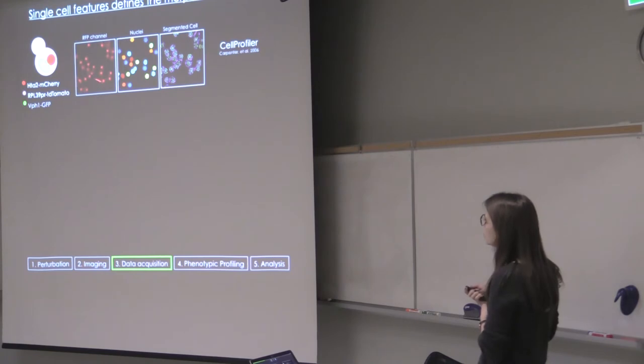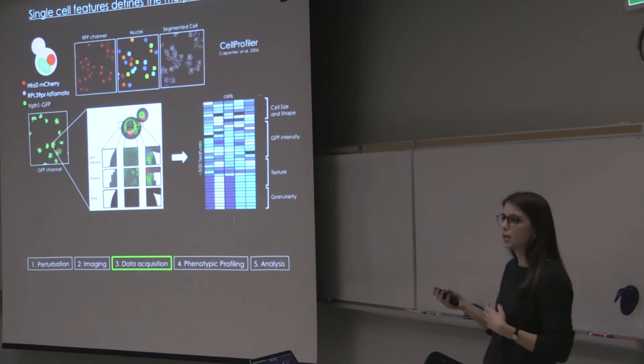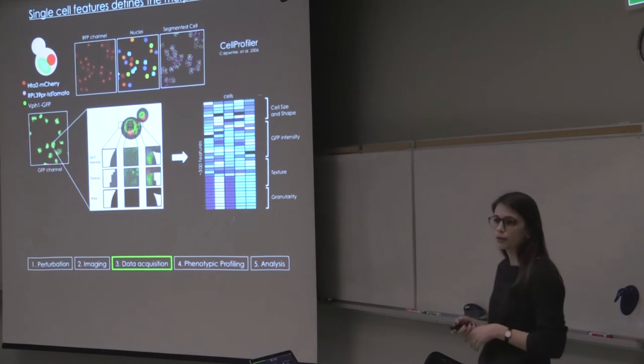After that we're using an open software called Cell Profiler in order to detect single cells. And we're looking at the RFP channel to locate which pixels are consisting of a single cell. So after segmenting each cell, we can then extract features for each cell specifically. And these features describe the morphology of the cells such as cell size and shape, intensity, texture and granularity.